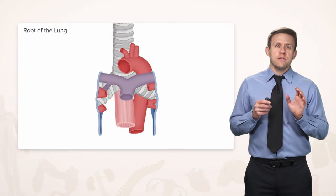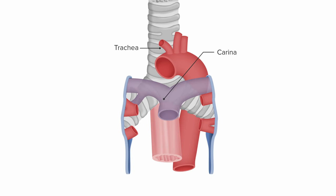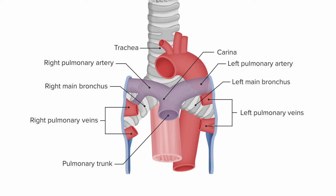Let's put some of those structures in to see the root of the lung a bit better. We see the trachea coming down before branching into the right and left mainstem bronchi, the pulmonary trunk coming from the heart dividing into the right and left pulmonary arteries, and returning from the lungs to the heart, the right and left pulmonary veins. After wrapping around this root of the lung, the pleura forms that double fold inferiorly, which we call the pulmonary ligament.